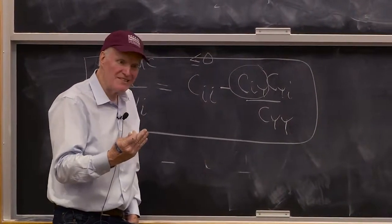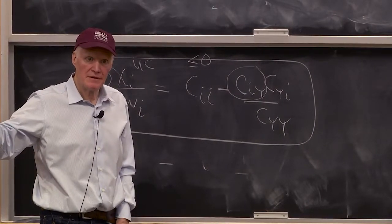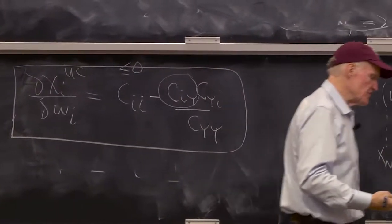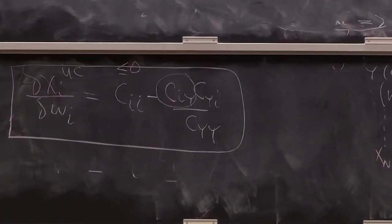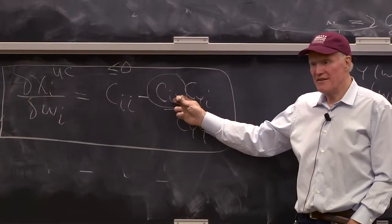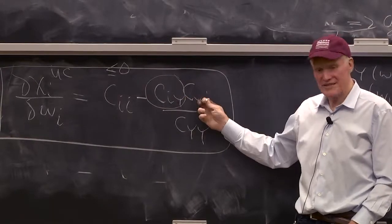And an inferior input in the production example is just like an inferior good in the consumer example. It's an input we use less of as we expand output. Of course, whatever the sign of this is, is the same as the sign of that is. So even if I didn't know the signs, I know the product of these two is positive.